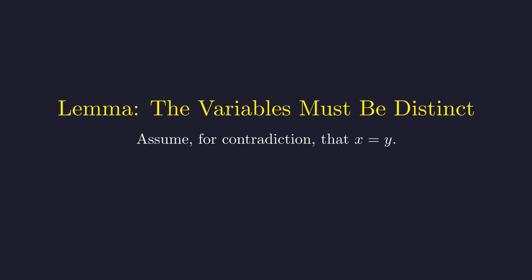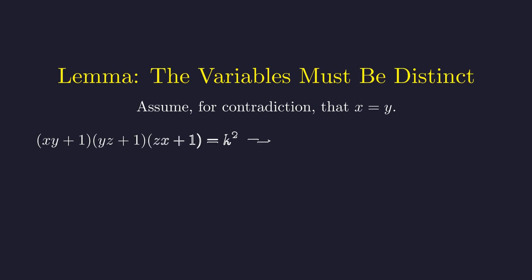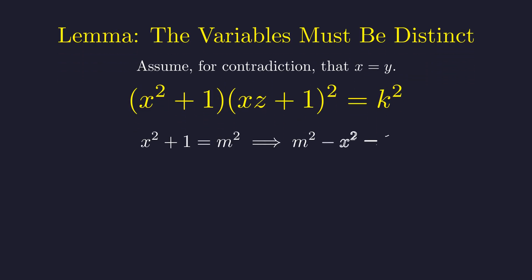Suppose two of our variables were the same. Let's say x equals y, just to see what happens. When we substitute y with x throughout our product, here's what we get. This simplifies beautifully to x squared plus 1 times the square of xz plus 1, all equaling some perfect square k squared. Now here's the key insight. For this entire product to be a perfect square, and since one of these terms is already a perfect square, the other term x squared plus 1 must also be a perfect square.